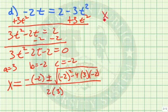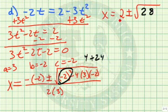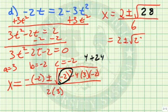So x equals negative of negative 2, which is positive 2, plus or minus the square root of: negative 2 squared is 4, and negative 4 times 3 times negative 2 gives plus 24, so we have 28 inside our square root, all divided by 2 times 3 which is 6. So we have 2 plus or minus the square root of 28, all over 6.